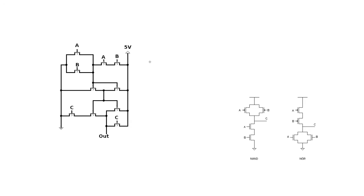The other approach is to recognize that we're dealing with a digital logic circuit, so we can find logic gates within the circuit and make an equivalent digital logic diagram. This makes the truth table process a lot simpler. The two really common CMOS gates we'll use are a NAND gate and a NOR gate.